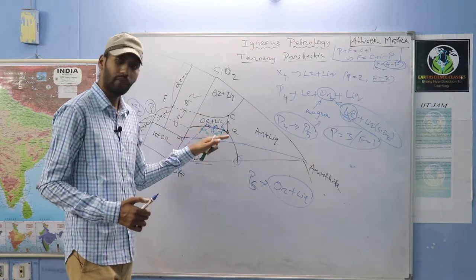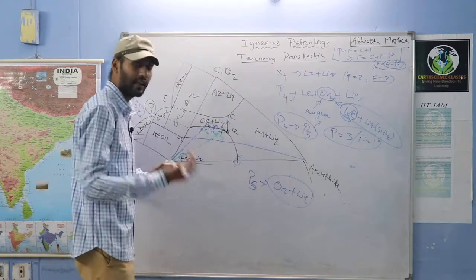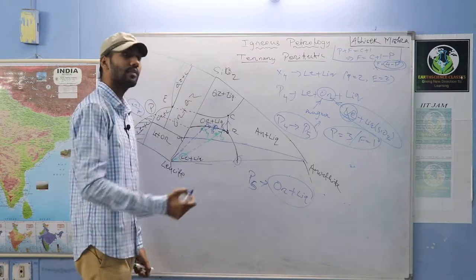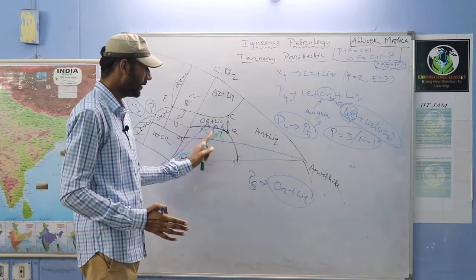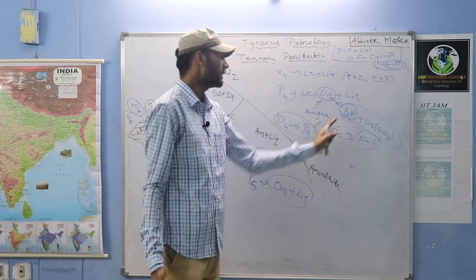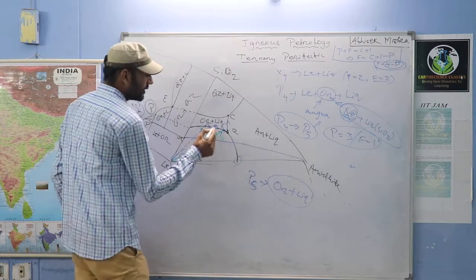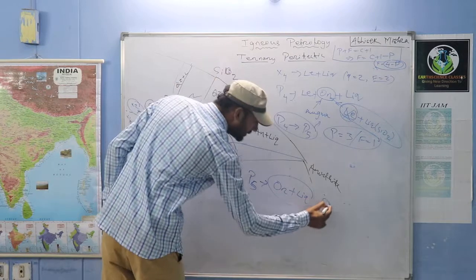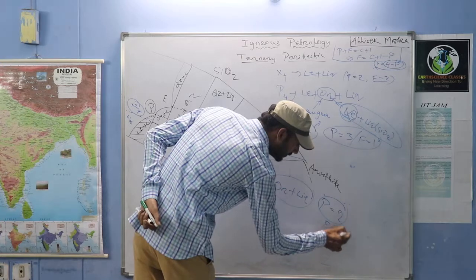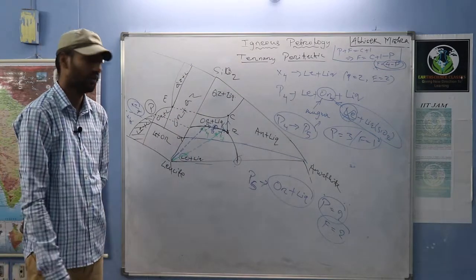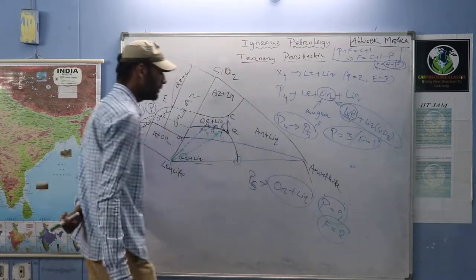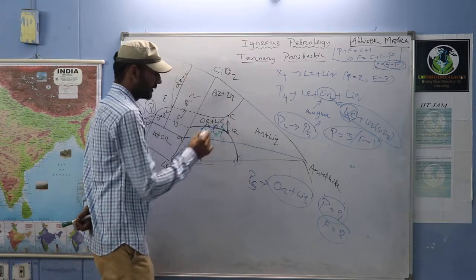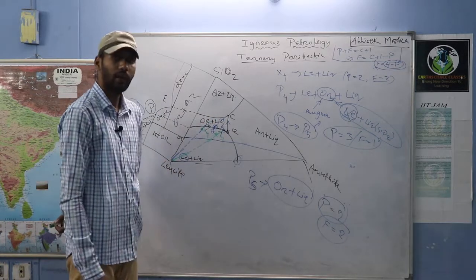The end composition for X4 is orthoclase plus quartz plus anorthite because X4 is above this line (outside the leucite-anorthite-orthoclase triangle). I have taken four compositions: X1, X2, X3, and X4. Now let us take one more composition in the anorthite field. If I take a composition in the anorthite field, the first mineral to crystallize will be anorthite, giving anorthite plus liquid.